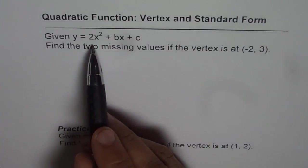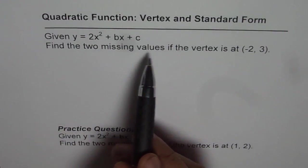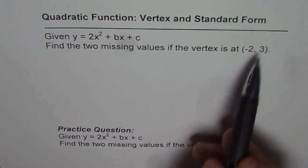We are given y equals 2x² plus bx plus c. Find the two missing values, b and c, if the vertex is at (-2, 3).